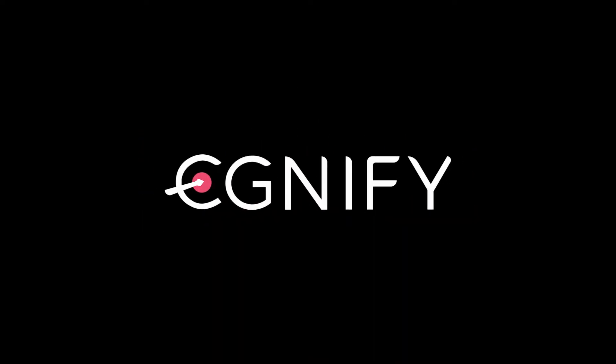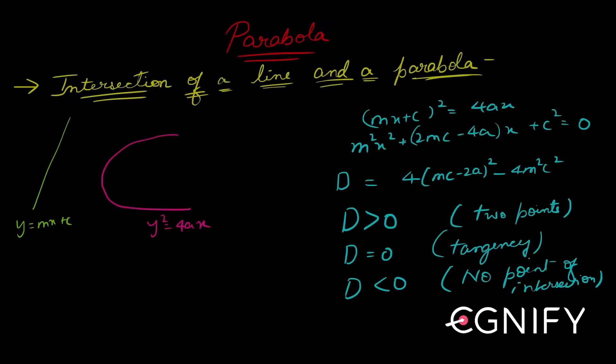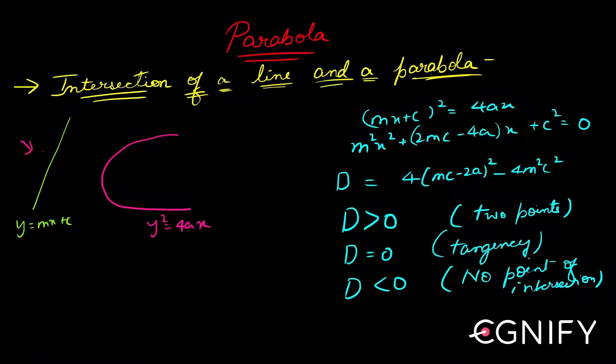Let us now look at the concept of intersection of a line and a parabola. This is very similar to intersection of a line and a circle. So we take a line y equals mx plus c and a parabola y squared equals 4ax.